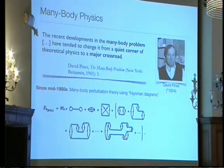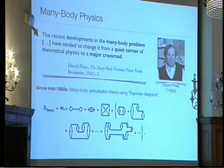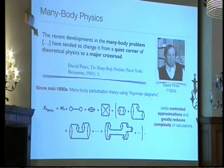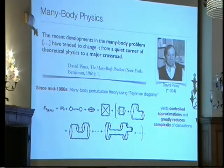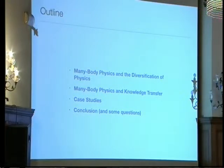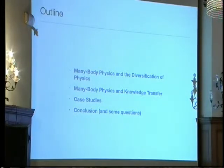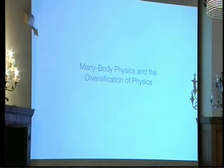Since the mid-1950s, many-body perturbation theory has been used. New schemes are developed that borrow methods from quantum electrodynamics — for instance, Feynman diagrams. These methods yield controlled approximations, so you can actually estimate what mistakes you're making, and they also greatly reduce the complexity of calculations. My outline covers: many-body physics and the diversification of physics post-WWII, knowledge transfer within physics, case studies, and conclusions.